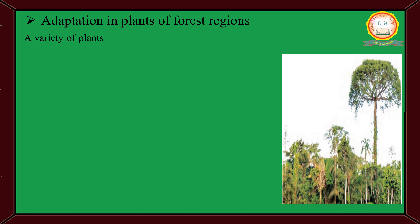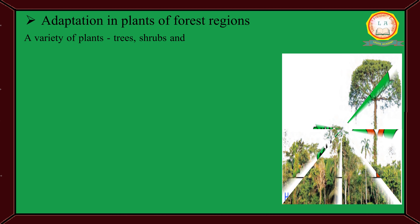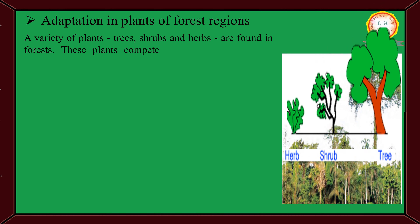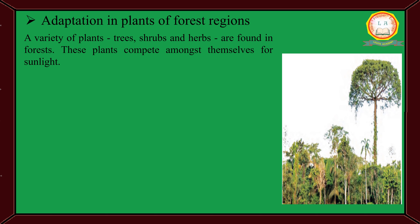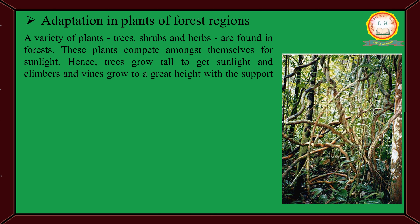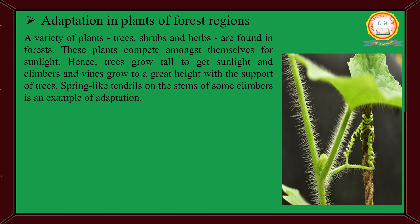A variety of plants — trees, shrubs and herbs — are found in forests. These plants compete amongst themselves for sunlight. Hence, trees grow tall to get sunlight, and clambers and vines grow to a great height with the support of trees. Spring-like tendrils on the stem of some clambers is an example of adaptation.